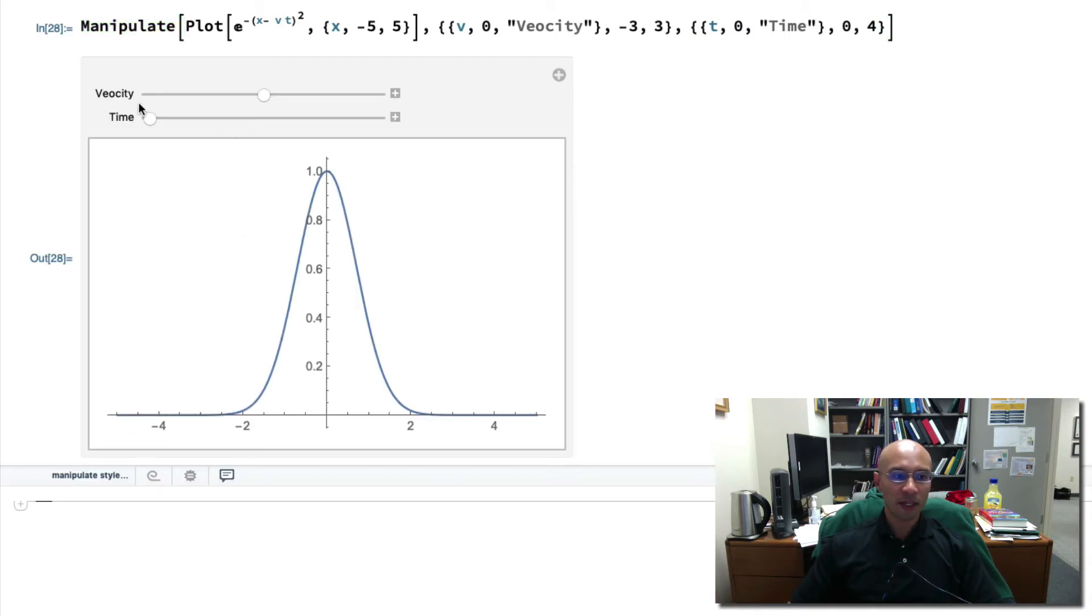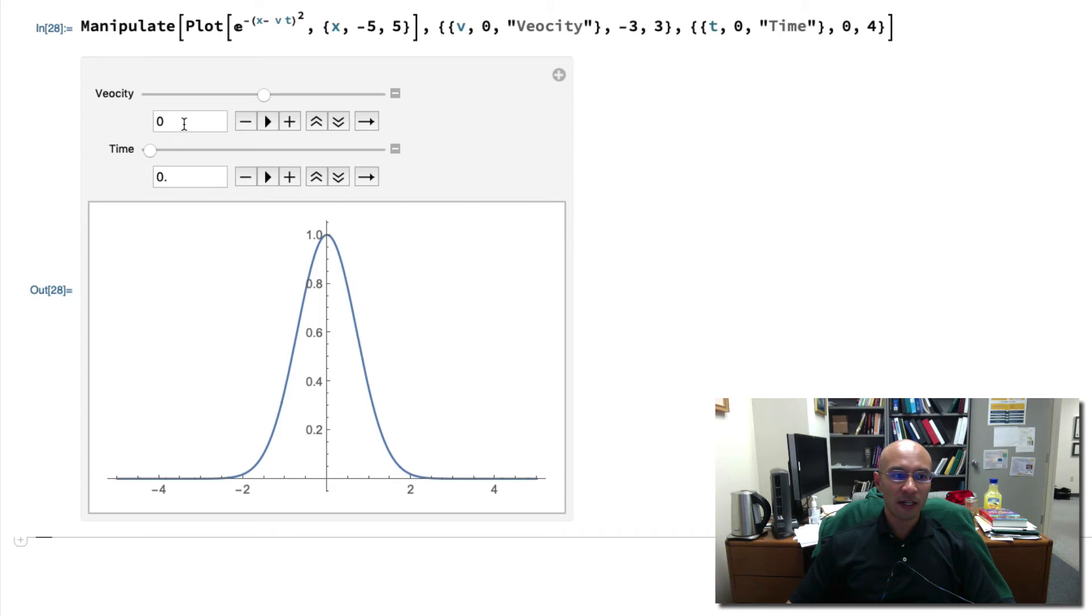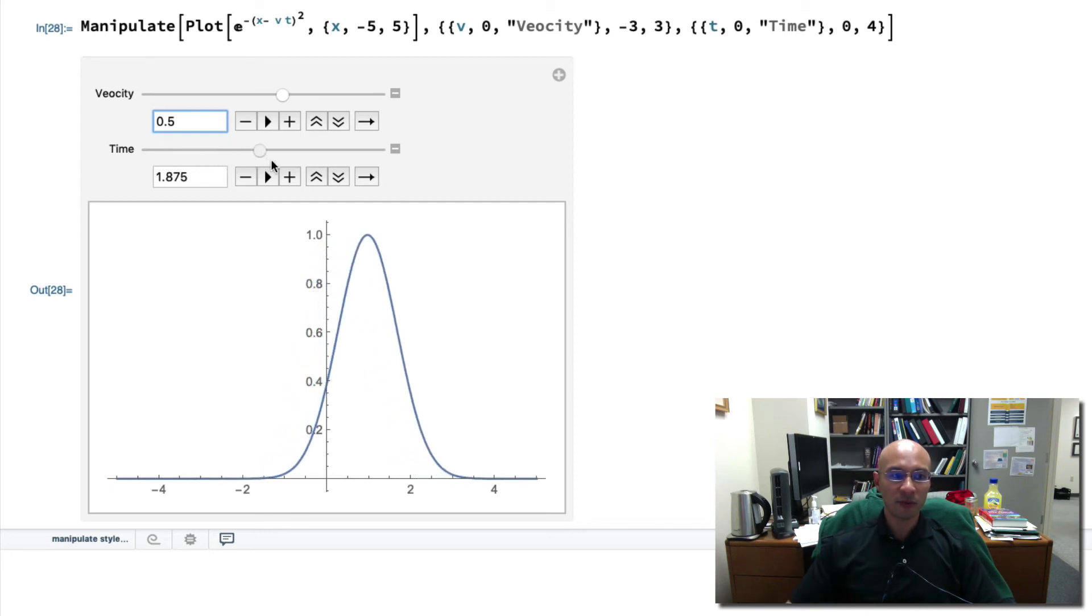If I run that, now I have a time slider and a velocity slider. And you can see, well, if I advance time, nothing happens. Why is that? Well, because if you look here, I set the velocity initially to be 0. Now let's change the velocity to 1 half. And now you can see as I push time forward, the wave moves. I can increase the velocity, and we see the wave move faster.